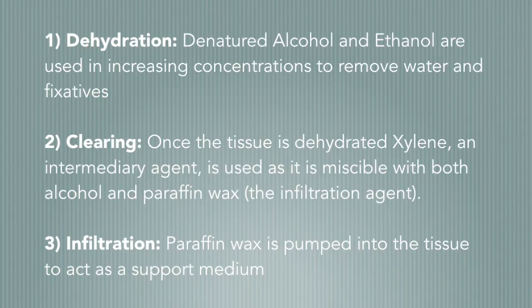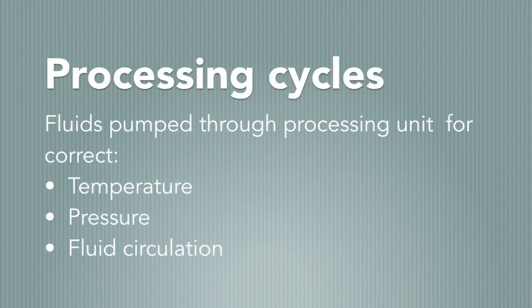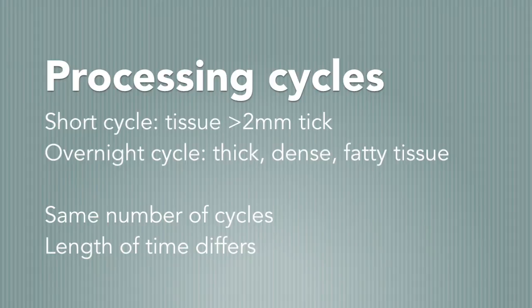During infiltration, paraffin wax is pumped into the tissue to act as a support medium. The fluids are pumped in and out of the processing unit in a controlled manner for correct temperature, pressure, and fluid circulation. Processing of tissue is done either in a short cycle, for tissues up to 2mm thick, or an overnight cycle, for thicker, denser, or fattier tissue. The number of cycles is often the same for both; however, the length of time the tissue is exposed to each fluid is what differs between cycles.